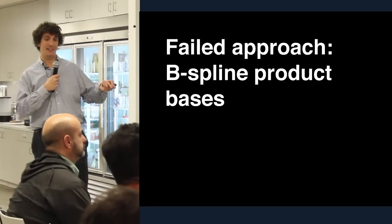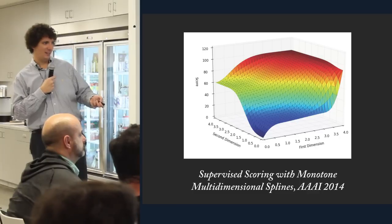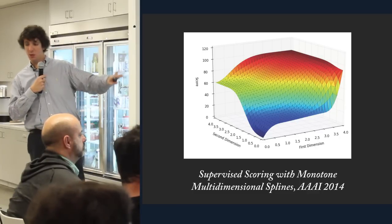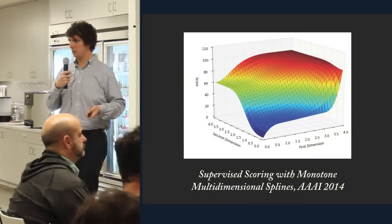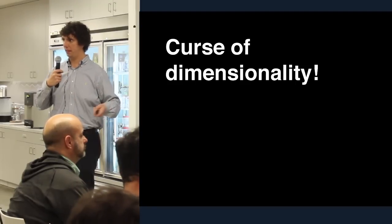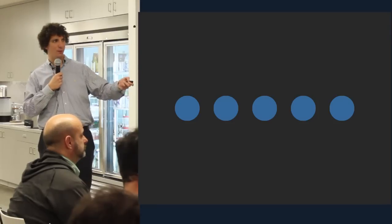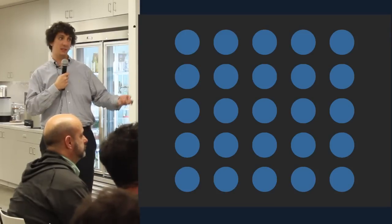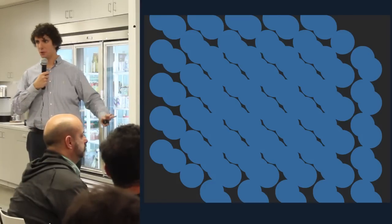Here's an approach that doesn't really work, but I still got a paper out of it: B-spline product bases, featured in AAAI 2014, which produce really beautiful scoring functions that can interpolate through things. Unfortunately, they don't scale to more than two dimensions because of the curse of dimensionality. In one dimension you solve for 5 coefficients; in two dimensions it's 25; in three dimensions it blows up exponentially. Fortunately, the AAAI reviewers did not pick up on that.